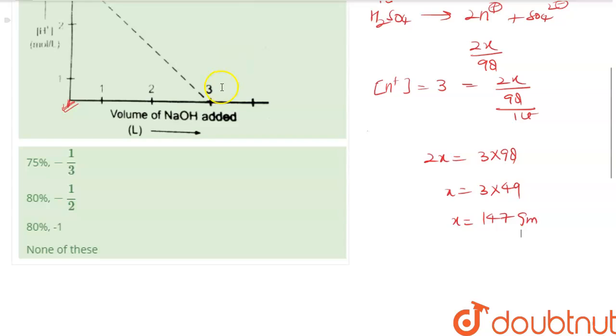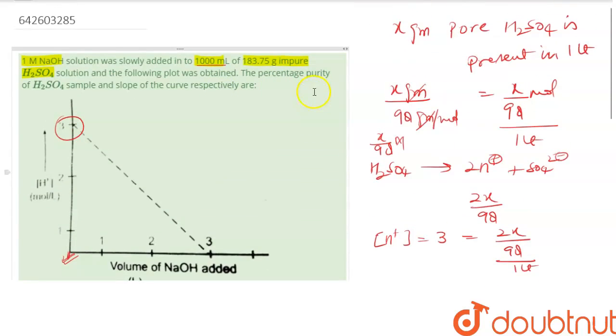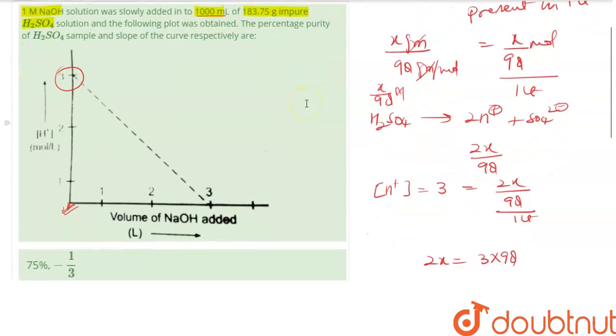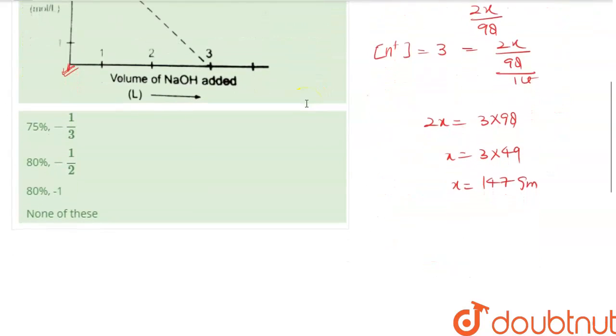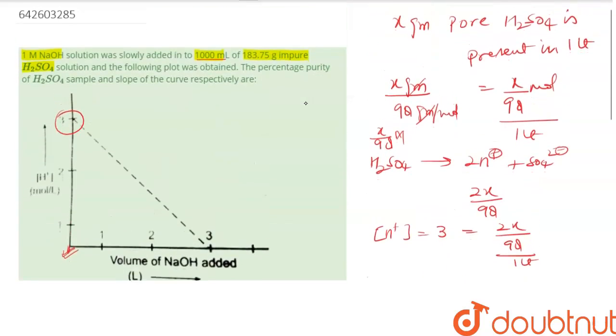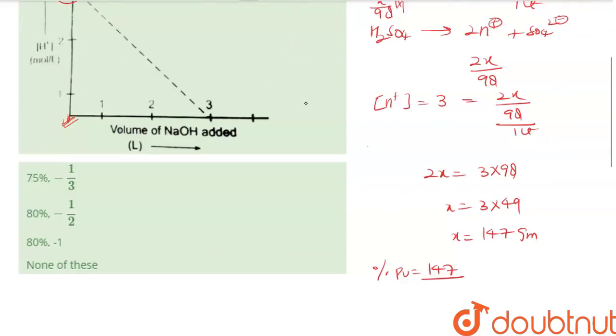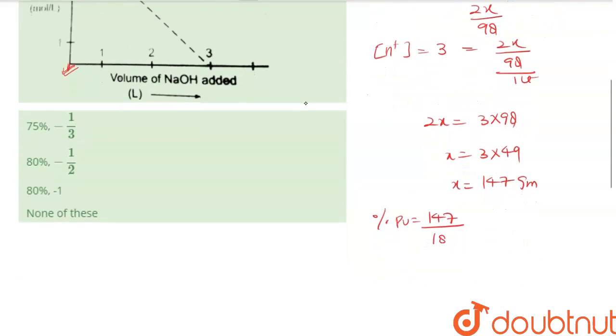This is 147 gram. So what is the percentage purity? So this is 147 divided by 183.75, 183.75 into 100.